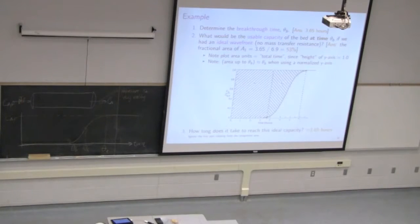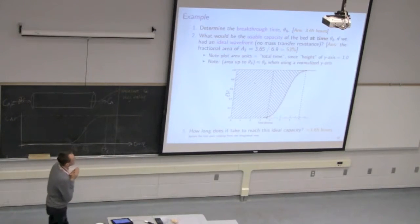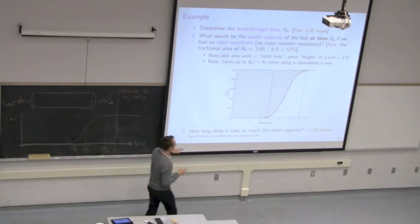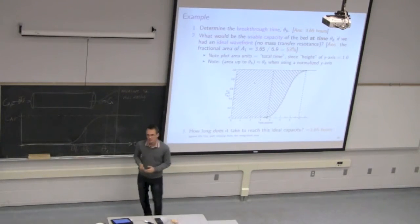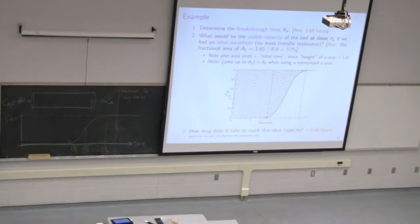The breakthrough point in time is exactly that moment where you first start to see the rise. Now, if this wave runs through the bed, what's the usable capacity of the bed? At 3.65 hours we're just seeing this rise; if we keep running, it goes to 6.9 hours. What fraction of the bed has been used? Let's reword this to 'usable capacity'.